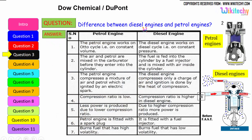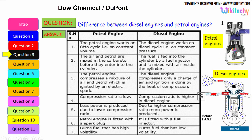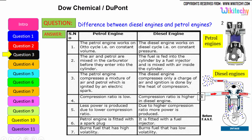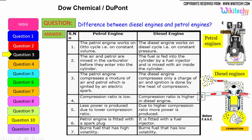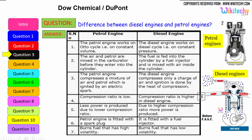Let us see the difference between the diesel engine and the petrol engine. The petrol engine works on the Otto cycle, therefore on constant volume, whereas the diesel engine works on the diesel cycle at constant pressure. The air and petrol are mixed in the carburetor before entering the cylinder, while in a diesel engine the fuel is fed into the cylinder by a fuel injector and mixed with air inside the cylinder.